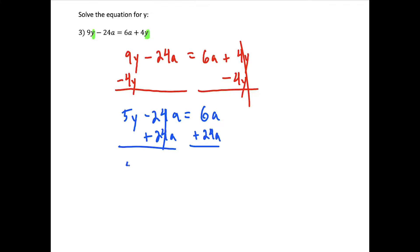And now what we have is 5y equals, and these are like terms. So we could do 6 plus 24 is 30, so we have 30a. And then all we have to do to solve for y, to get rid of that times 5, we're going to divide by 5. So 5 over 5 cancels, and now we have y equals 30 divided by 5 is 6. So we have y equals 6 times a.